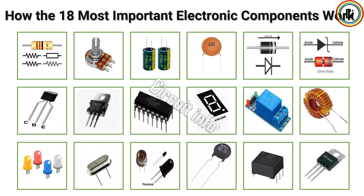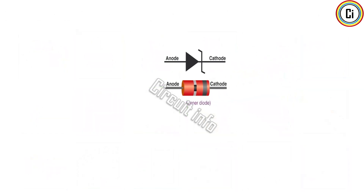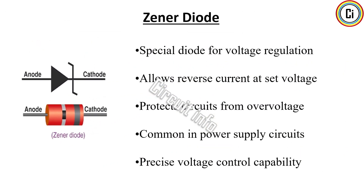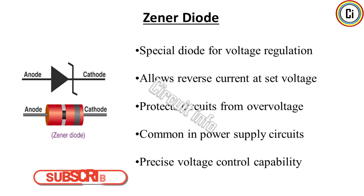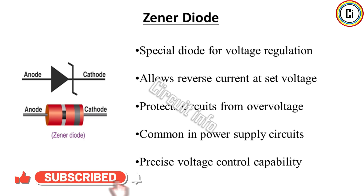A Zener diode is a special type of diode designed to allow current to flow in the reverse direction when the voltage exceeds a certain value called the Zener breakdown voltage. This property makes it ideal for voltage regulation and protection circuits, where it maintains a steady voltage despite fluctuations in input. Zener diodes are widely used in power supplies to protect sensitive components from voltage spikes. They come in various voltage ratings and are crucial for stabilizing circuits to ensure proper operation and avoid damage.